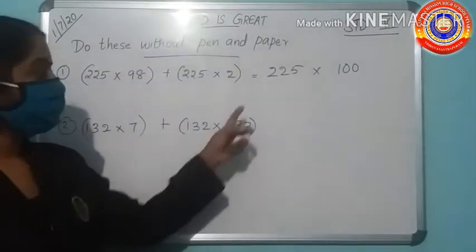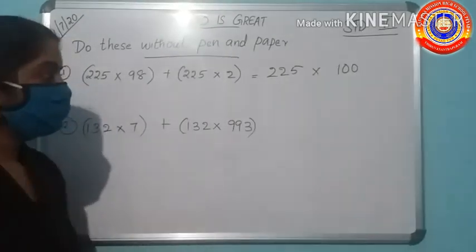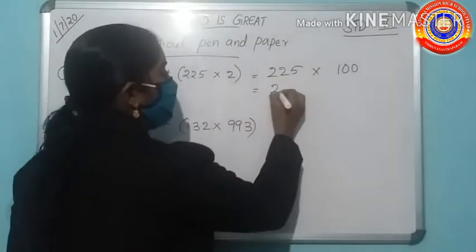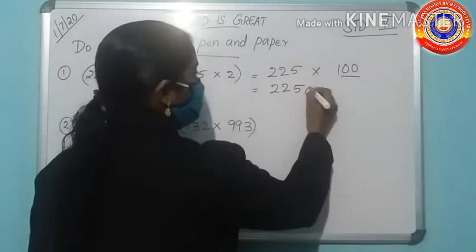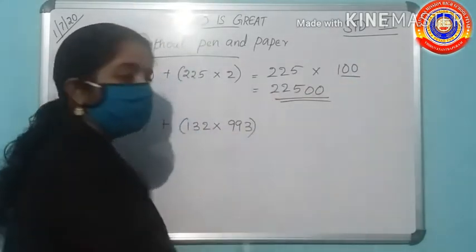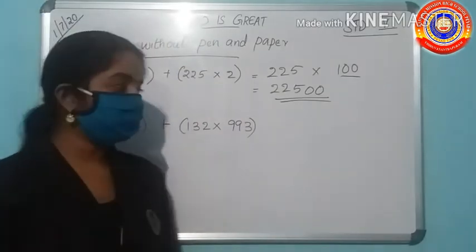Then 225 into 100. 225 into 1 is 225, then add the two zeros. You got the answer 22,500.